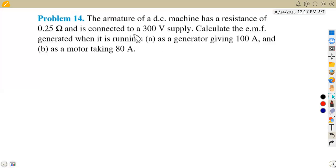So in this case, we've got two things we need to consider here. There is an armature that we are focusing on the DC machine, which we are given its resistance. Our armature resistance of 0.25 ohms is connected to the 300 volt supply, which is the terminal voltage of 300 volt supply. Calculate the EMF generated when it is running, that is the first part.